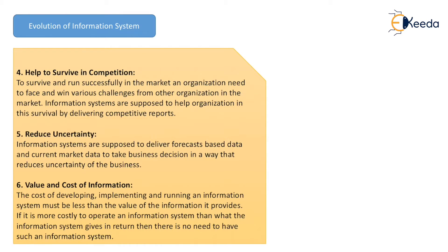5. Reduce the Uncertainty: Information systems are supposed to deliver forecast-based data and current market data to support business decisions in a way that reduces the uncertainty of the decision-making process.